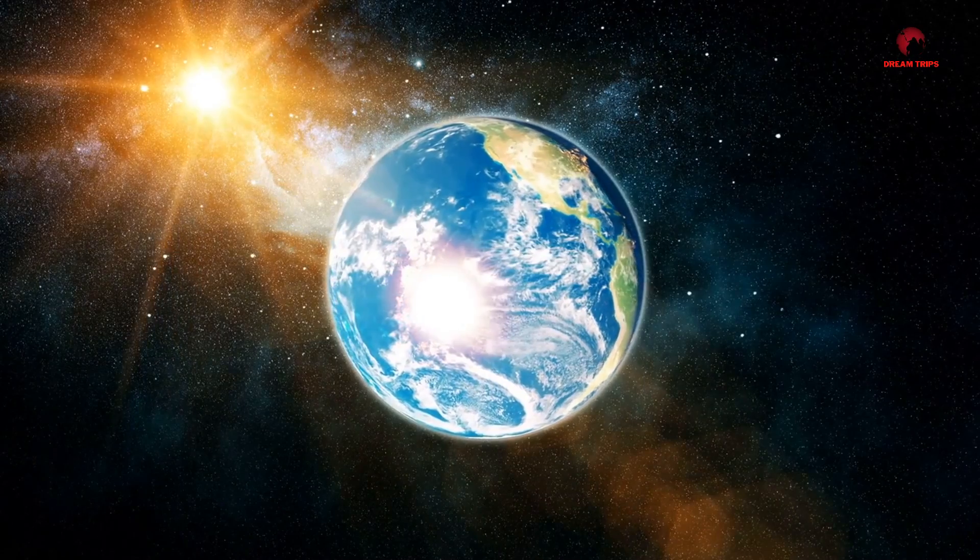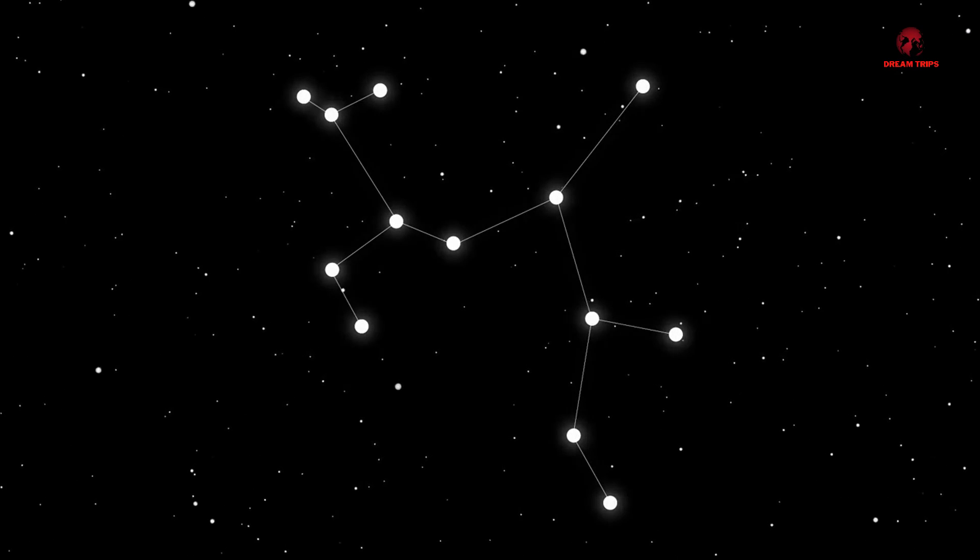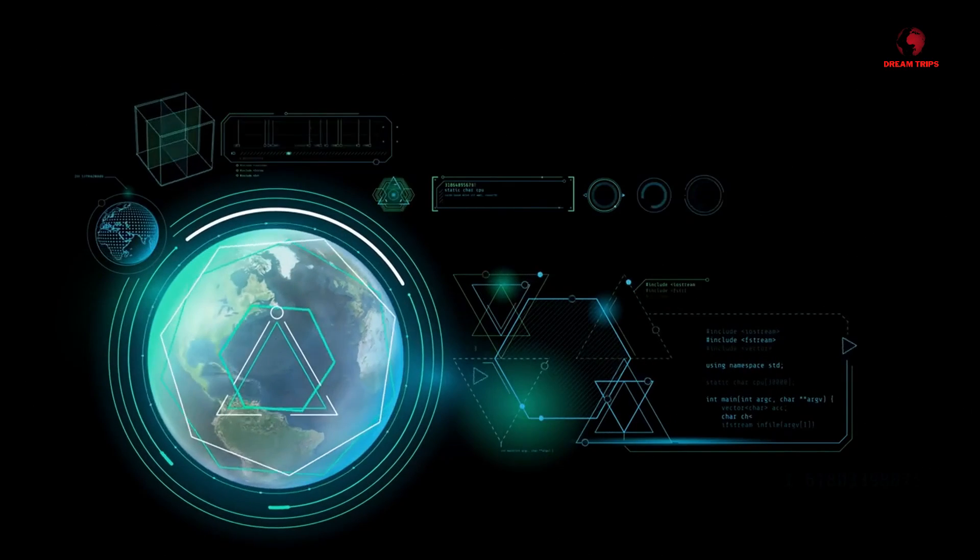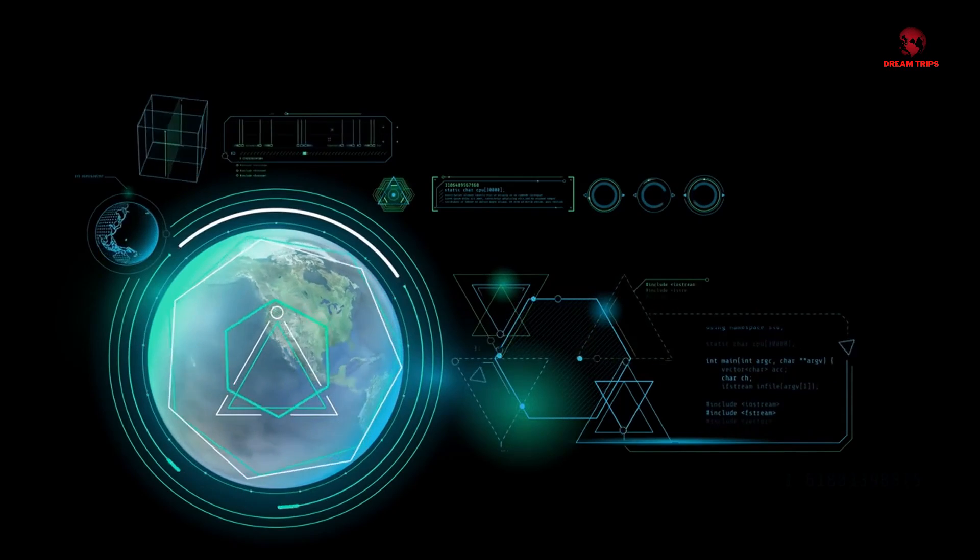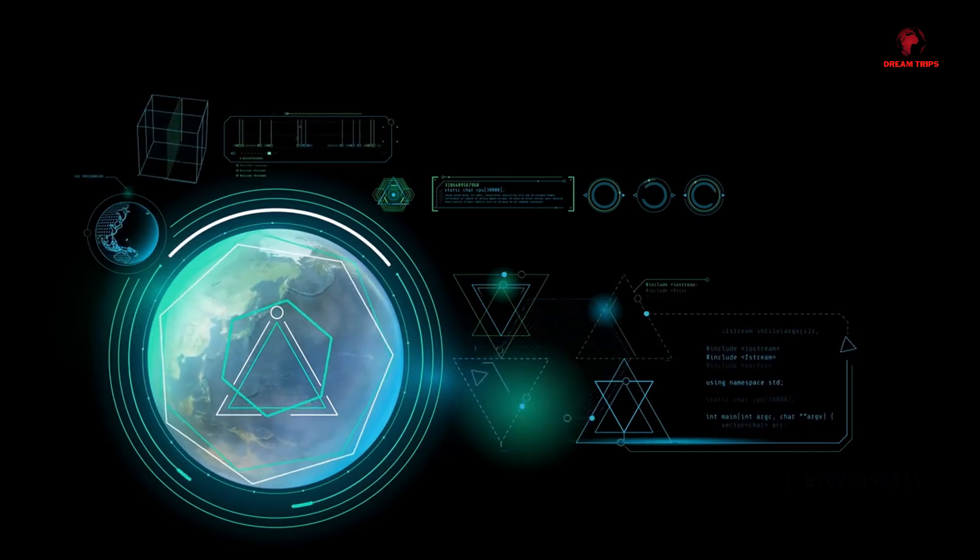Embarking on a thought experiment, let's consider the impact on hypothetical planets orbiting these celestial titans. Orbiting the Sun, planets like Earth thrive in the habitable zone, where temperatures allow water to exist in liquid form, a crucial ingredient for life as we know it. The Sun's stable luminosity and gravitational pull have fostered a delicate balance, enabling life to flourish on our planet for billions of years. Its light and warmth regulate our climate, drive weather patterns and sustain photosynthesis, the foundation of Earth's food chain.